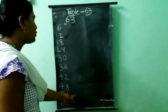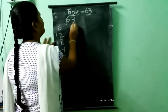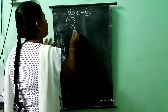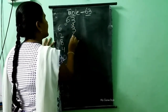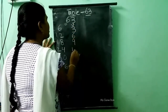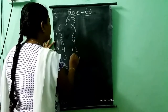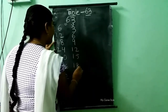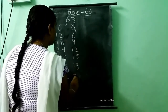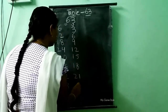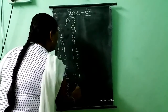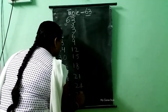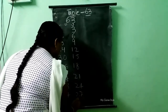And here we have 3, so we need to write the 3 times table: 3, 6, 9, 12, 15, 18, 21, 24, 27, and 30.